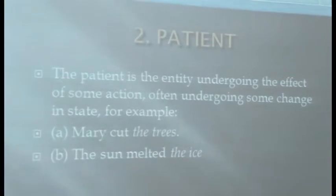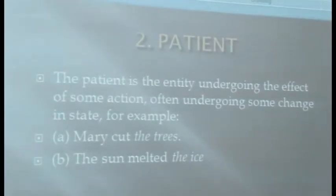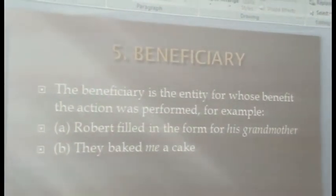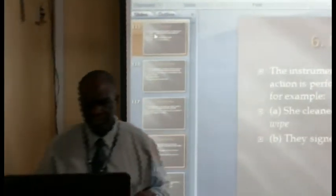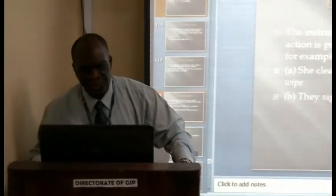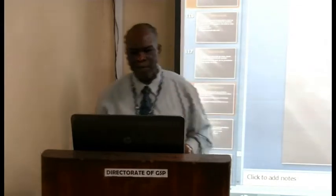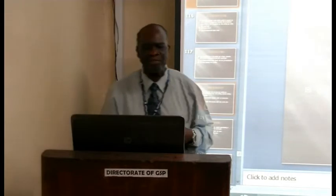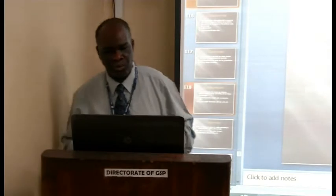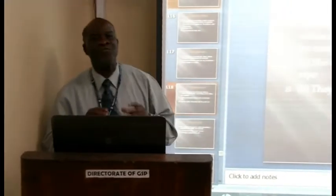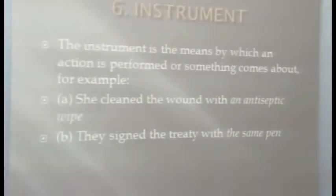The second thematic role is known as the patient. The sixth semantic role is called the instrument — quite straightforward. The instrument is the means by which an action is performed or something comes about. For example, 'She cleaned the wound with an antiseptic wipe.' The nominal 'the pen' refers to the instrument used to sign the treaty.